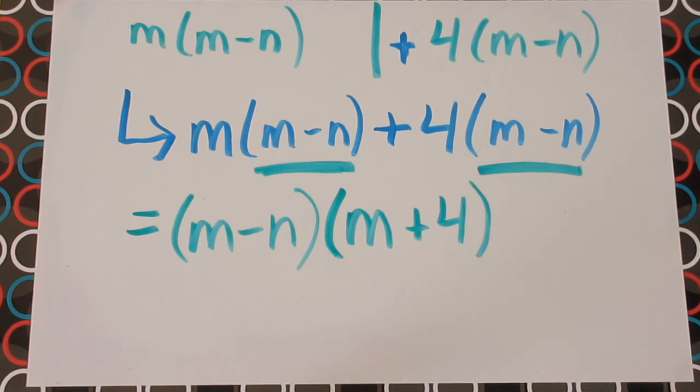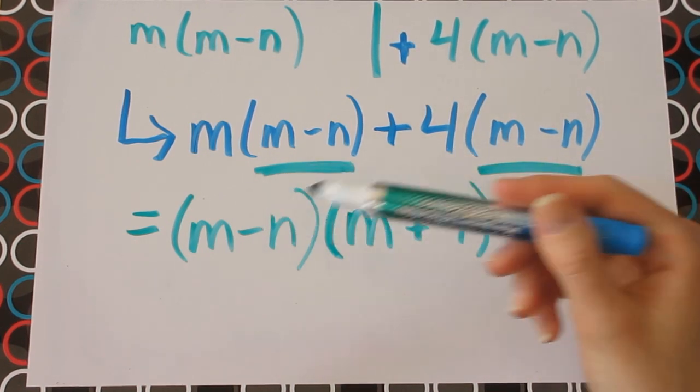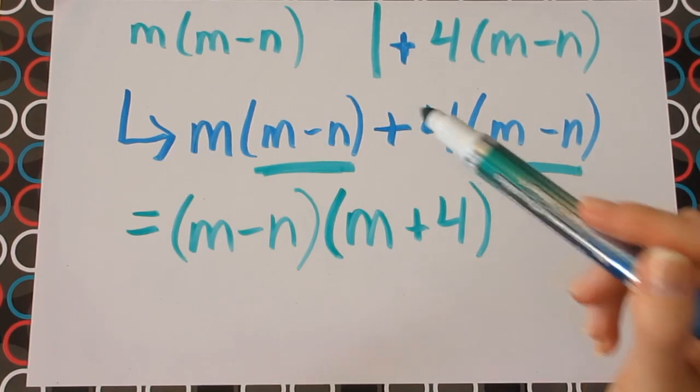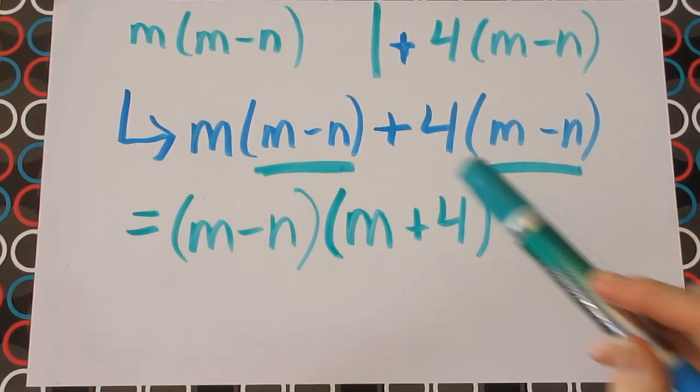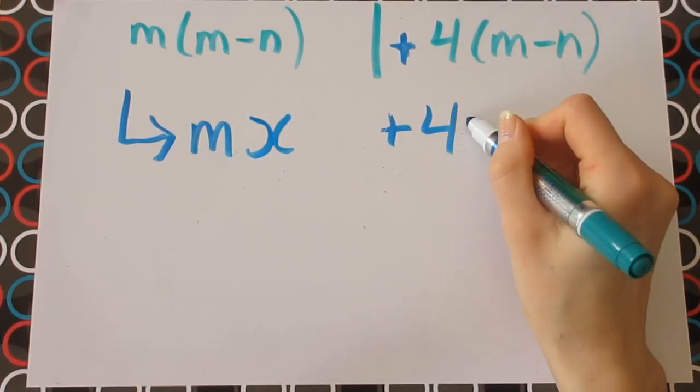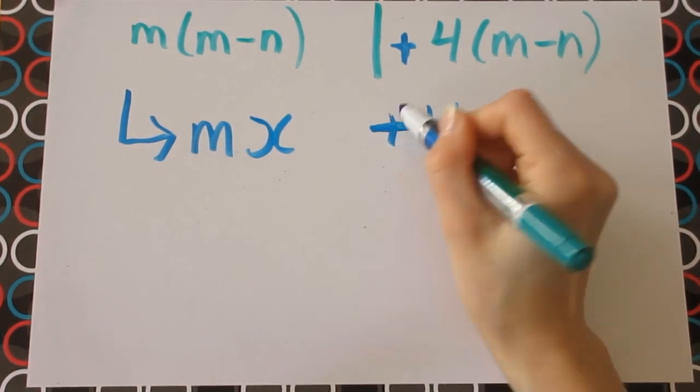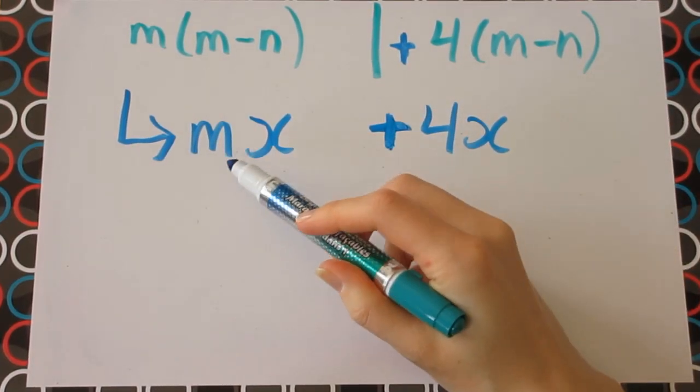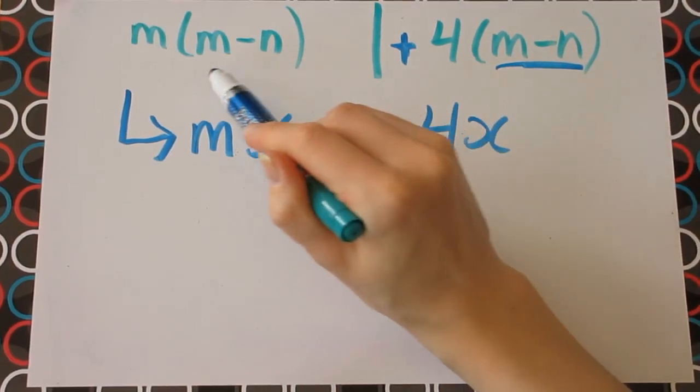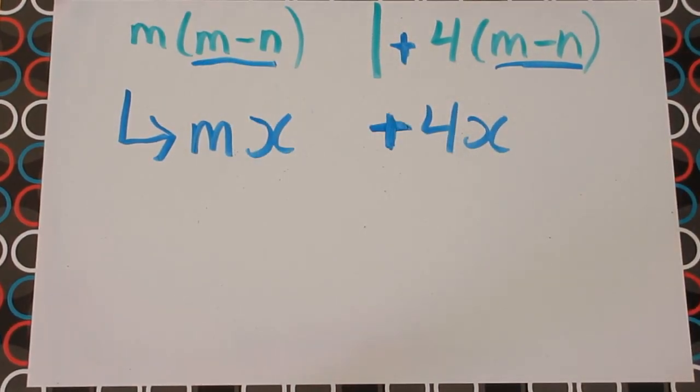So you might be a little confused at this stage. How did these suddenly come together as two factors? Well, let's go back a bit. Let's pretend that instead of an m minus n, our equation had x's instead. So if that were the case, our equation would be mx plus 4x, replacing the m minus n with an x.